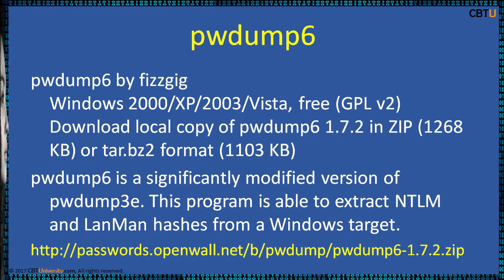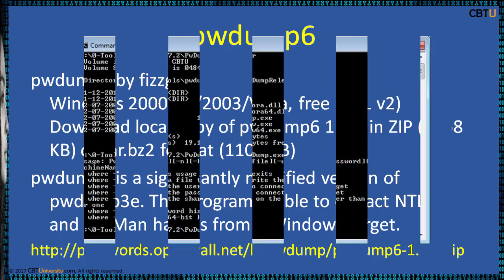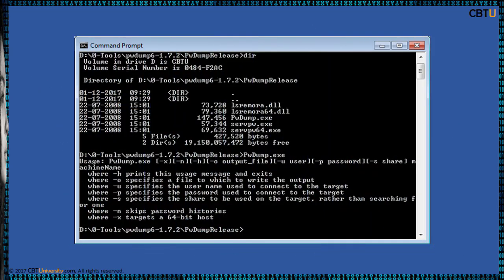Password Dump 6 is a modified version of Password Dump 3e. This program is able to extract NTLM and LANMAN hashes from a Windows target. It is also capable of displaying password histories if they are available. This is a screenshot of Password Dump 6 — we will see demos of Password Dump in relation to other password cracking tools in the coming sessions.